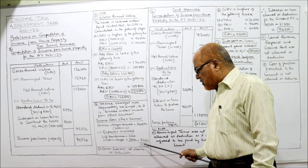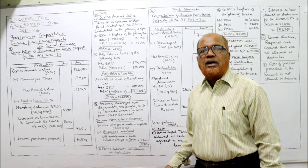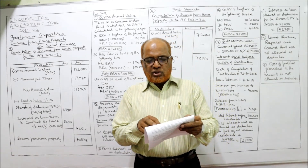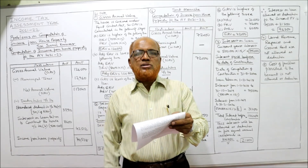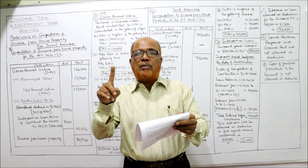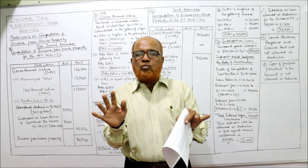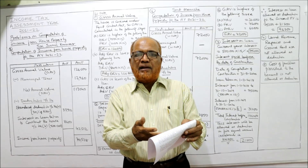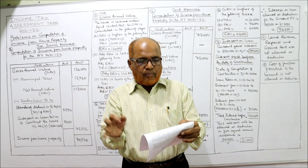So ₹24,000 minus ₹8,200 = ₹15,800, which is the taxable amount under income from other sources. Regarding repairs — ignore. Interest paid on loan taken to construct the house is allowed as deduction: ₹9,600 given, but this includes penal interest of ₹1,000. Remember, as stated in the theory video, penal interest will not be allowed. Penal interest means interest on interest, so out of ₹9,600, only ₹8,600 will be allowed.